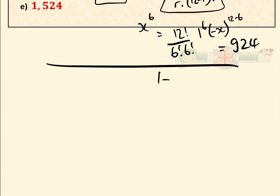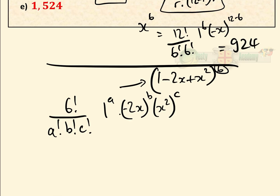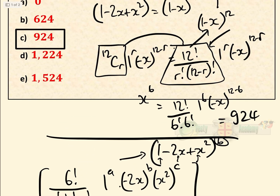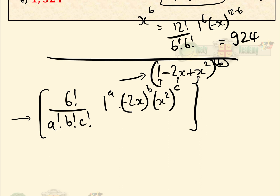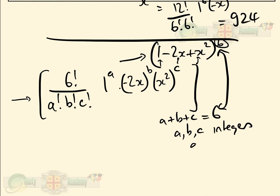Looking at (1 minus 2x add x squared) to the power of 6, the multinomial theorem says the general term is 6 factorial — the power — over a factorial b factorial c factorial, times 1 to the power of a, times (minus 2x) to the power of b, times (x squared) to the power of c, where those are the three parts of the expression. The multinomial theorem also states that a plus b plus c must equal 6, and that a, b, and c are non-negative integers.